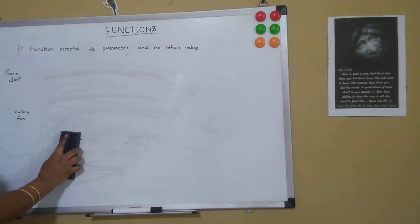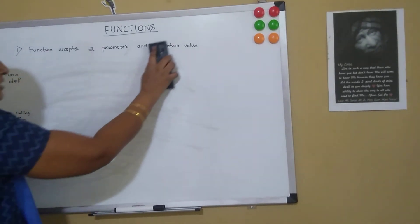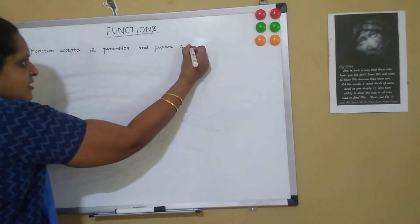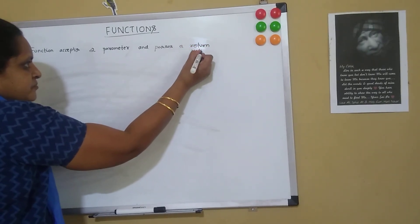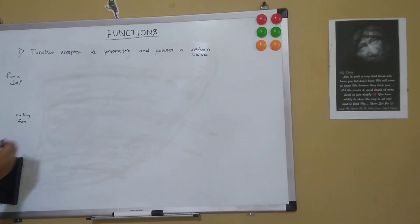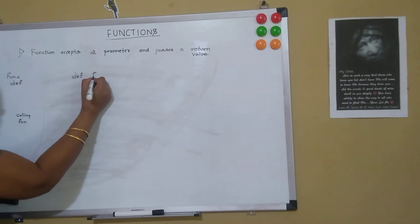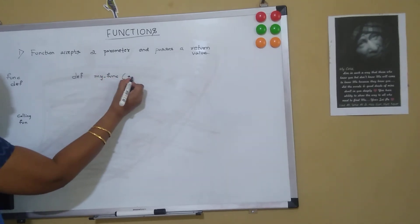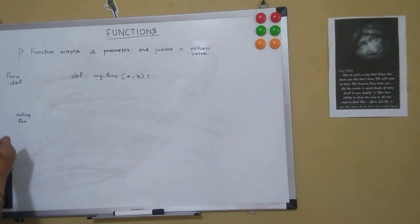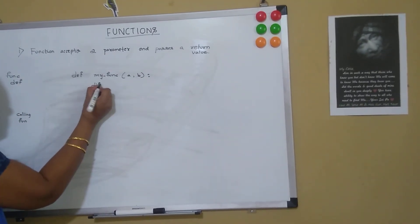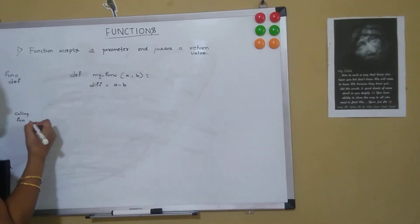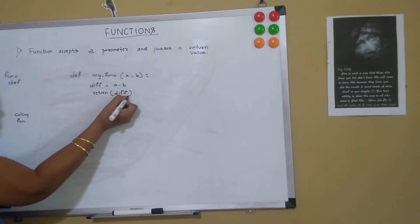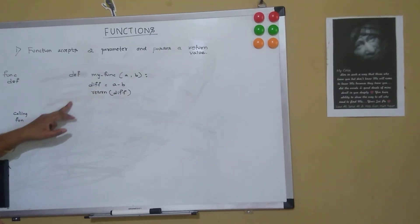Now let's see a function which accepts two parameters and also passes a return value. I say: def my_function, it takes two parameters a and b, then a colon. Then I say: difference = a - b. In this case I am taking two parameters and also returning a value to the calling function.